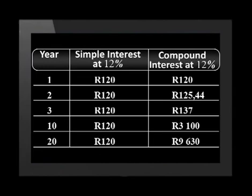There's a lot of increasing going on here. Check out what a big difference it makes after 20 years. With simple interest at 12%, you would have earned 20 times R120 in interest, which is R2,400. But with compound interest, you would have earned R9,630 in interest — not bad when you remember that you only started with R1,000. Think what I could do with R9,630! This has been mind-blowing. Thanks a lot.